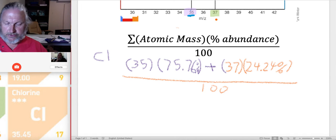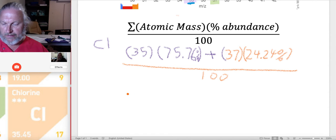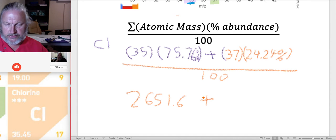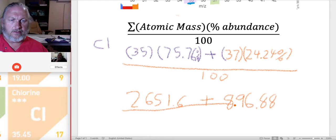So I've got to get my trusty calculator. Let's get my trusty calculator out. I've got it right here. So I'm going to go 35 times 75.76. All right. I'm going to write that down. And I got 2651.6. And then I'll say 37 times 24.24%. And there I got 896.88, divided by 100. All right. I'm getting better.